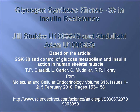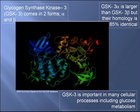Welcome to our presentation. Our presentation is about glycogen synthase kinase 3. GSK3 comes in two forms, alpha and beta, and is found on chromosome 19.